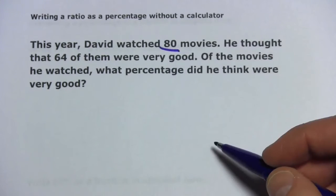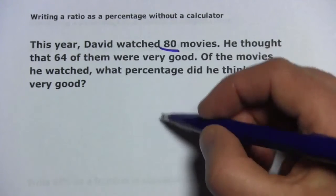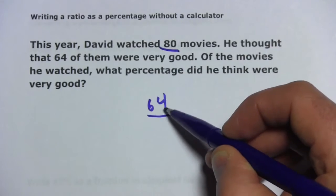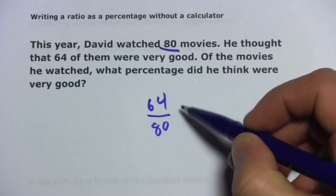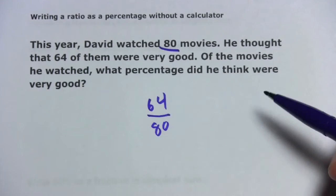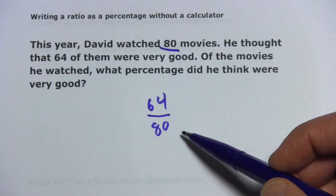This number, the total number, is the one that's going to go on the bottom. And you can think of this as 64 out of 80 movies total. He thought these were good. So that's how to set up the ratio.